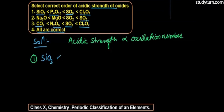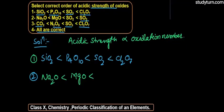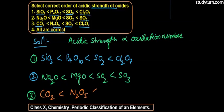Let's review the options: First option is SiO2 < P4O10 < SO3 < Cl2O7. Second option is Na2O < MgO < SO2 < SO3. Third option is CO2 < N2O5 < SO3 < Cl2O7. Fourth option is all of these. We will calculate the oxidation number for all of them.